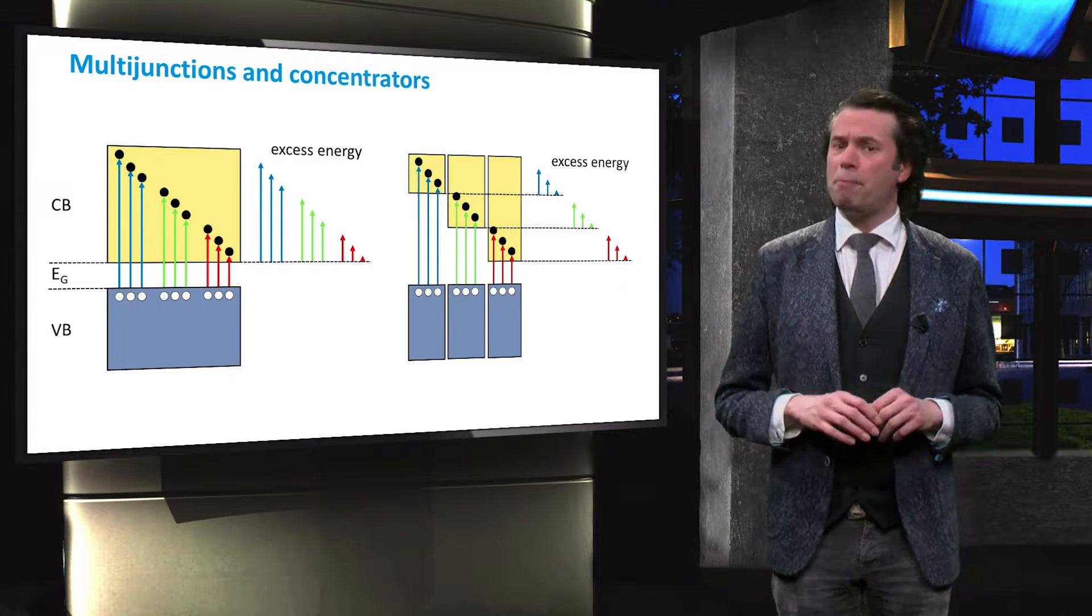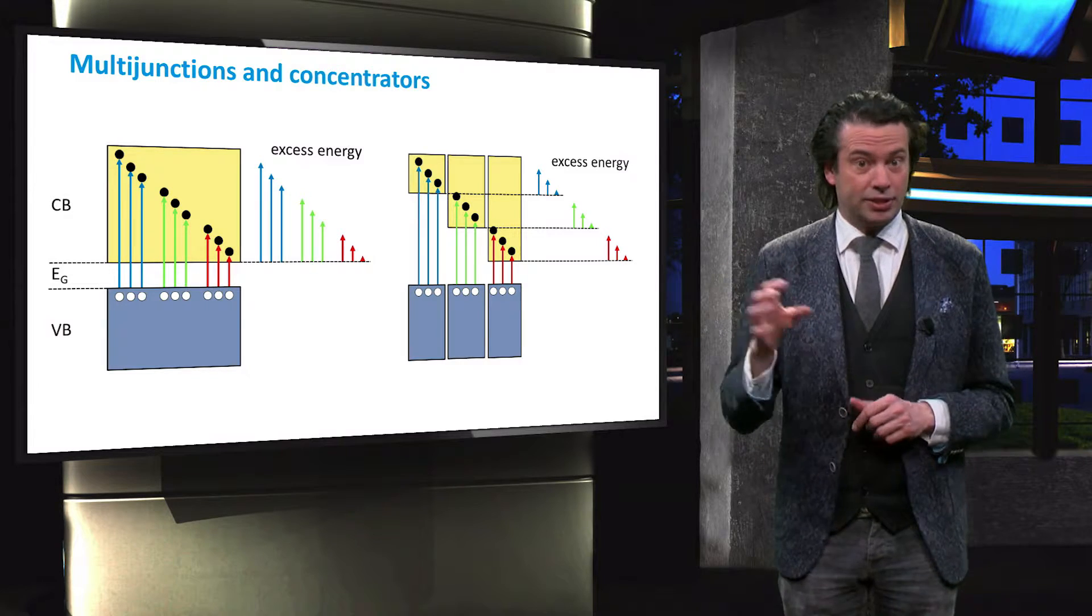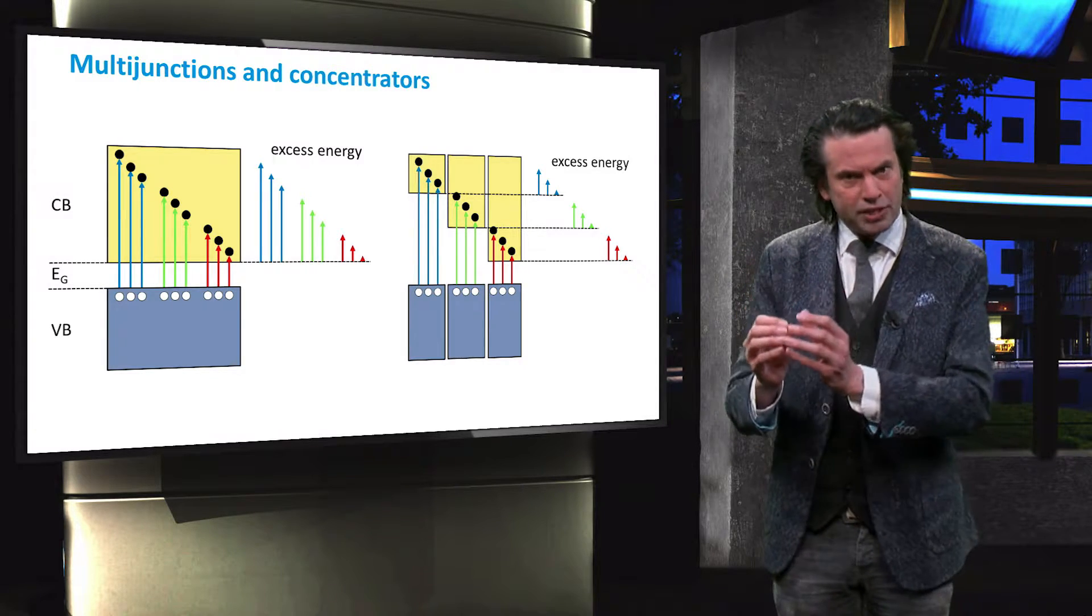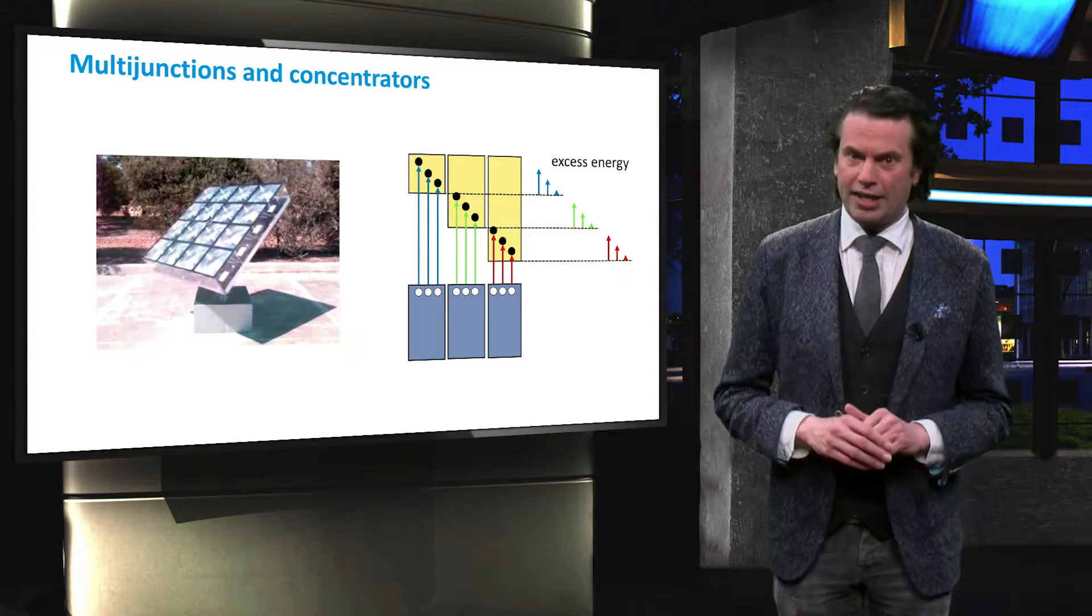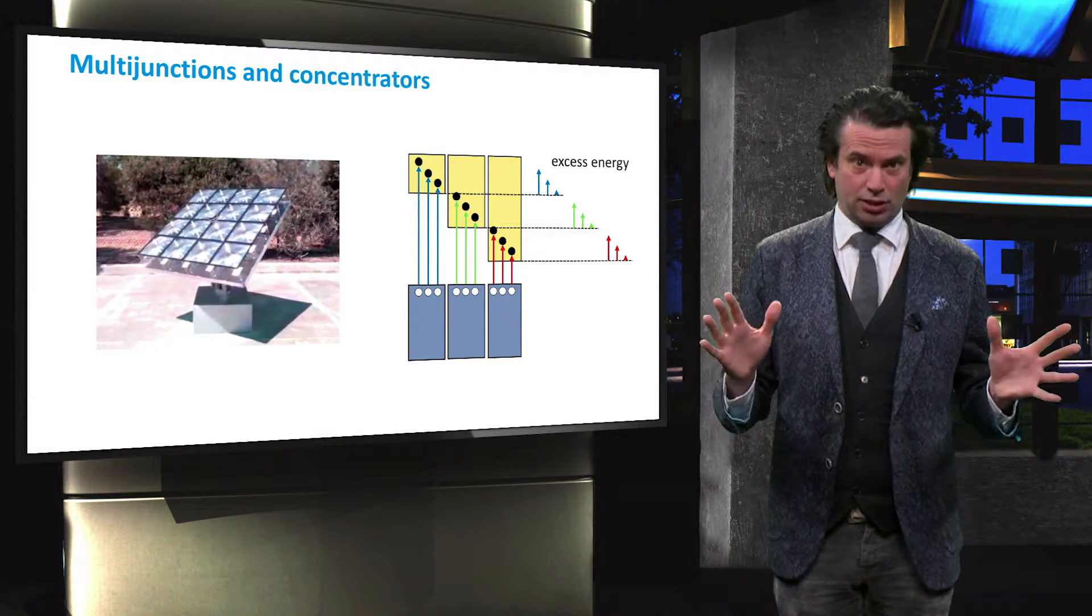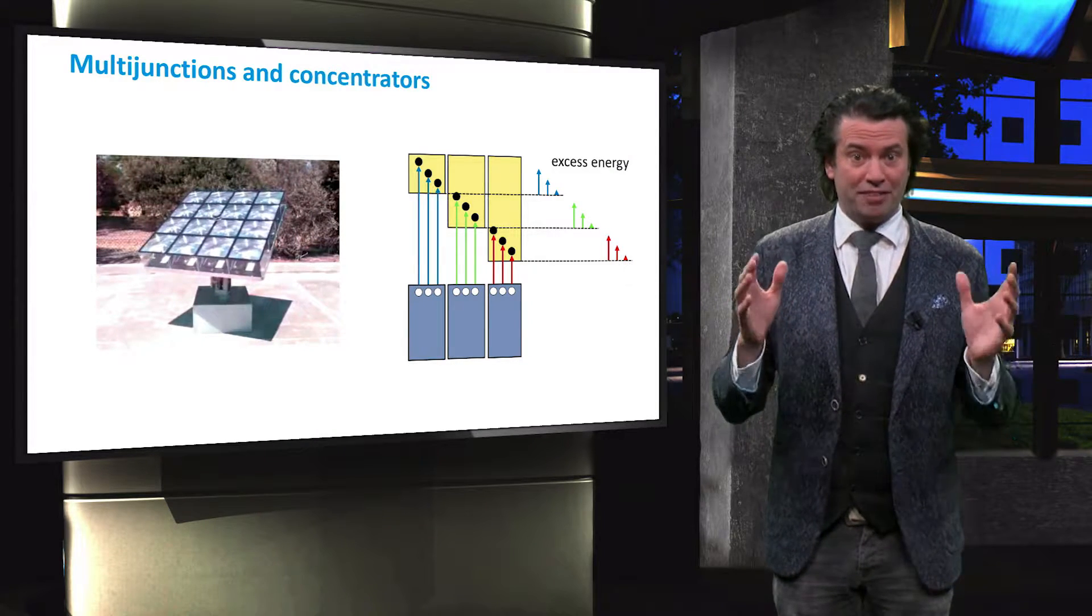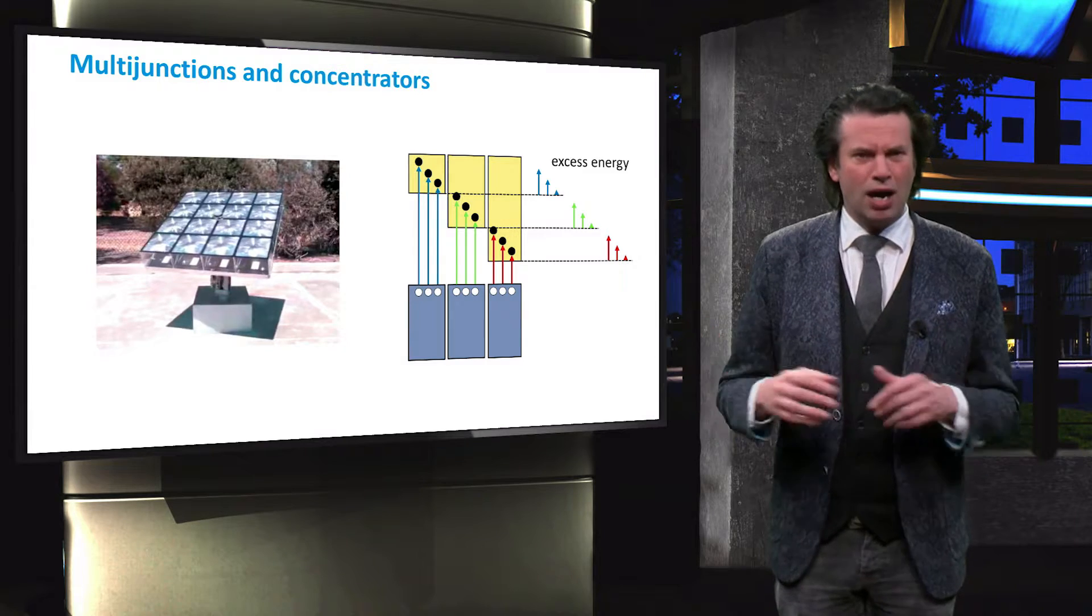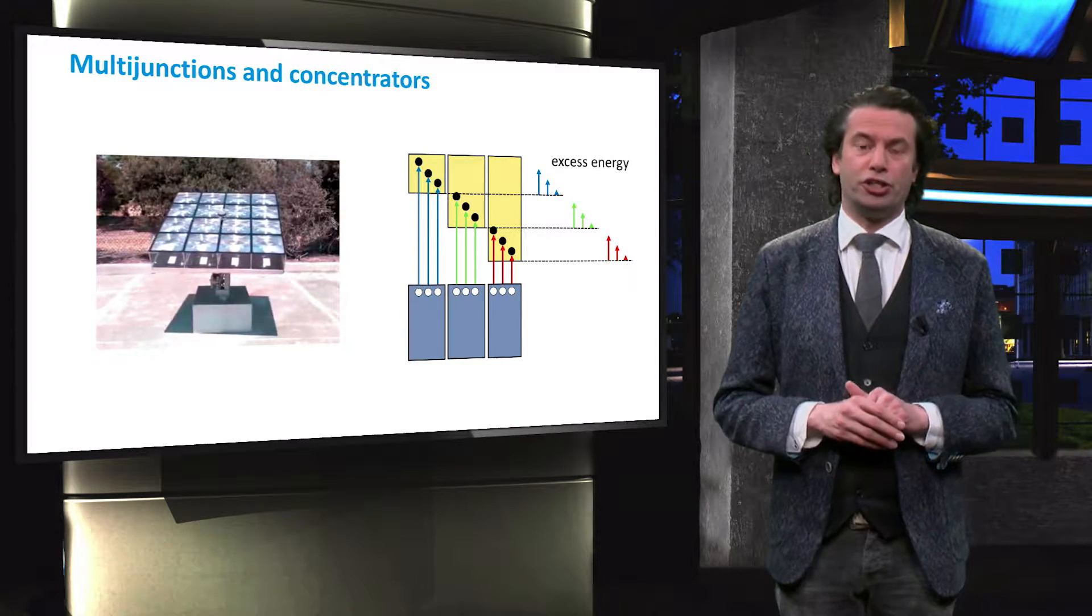Those high-performance multi-junction cells can be used in combination with lenses and mirrors that concentrate the sunlight. A small solar cell area can then be illuminated by the intensity of many suns. Multi-junction solar cells, and the different materials and device structures used to make them, are extensively discussed in the PV technology course.